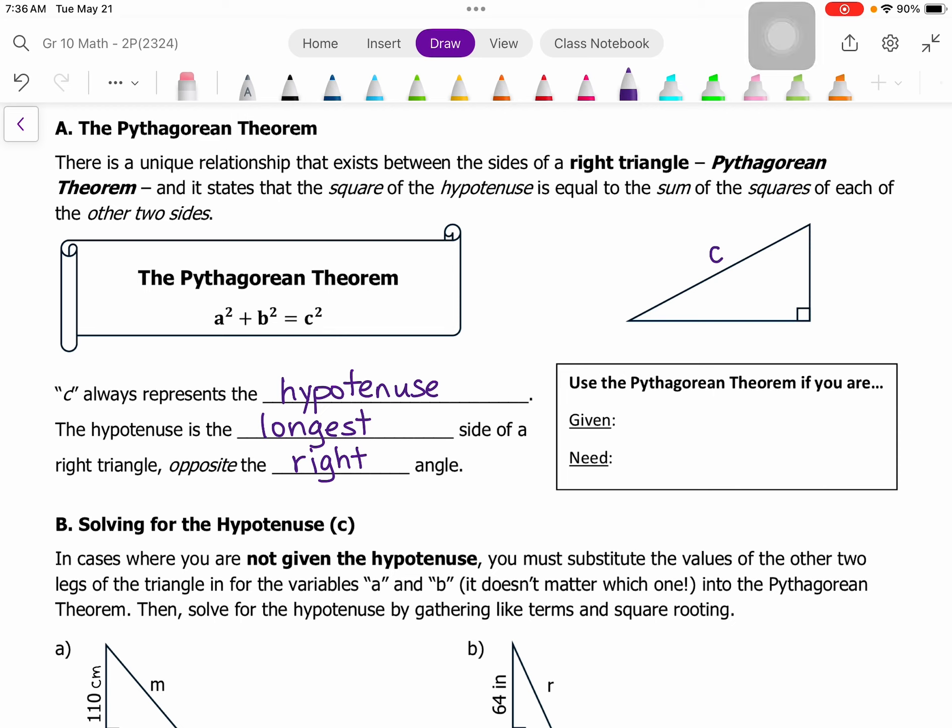So in this case, where we say that a squared plus b squared equals c squared, that c squared, the one that is on the side by itself, is always the longest side. So essentially what we're saying is the two shortest sides, when we square them and add them together, they are equal to the square of the longest side.